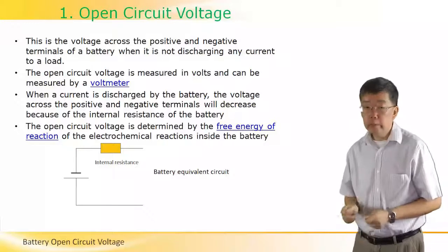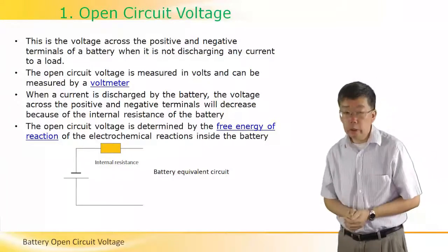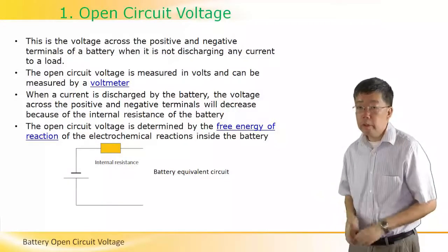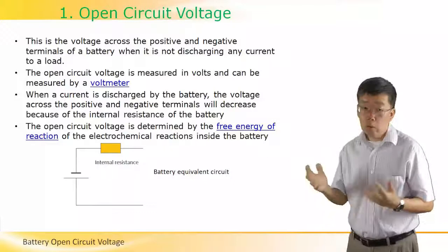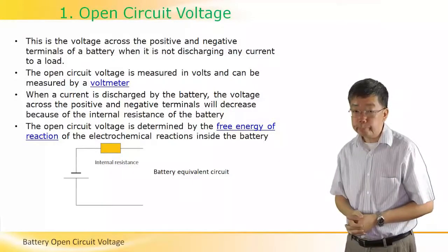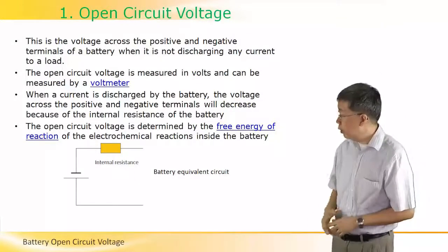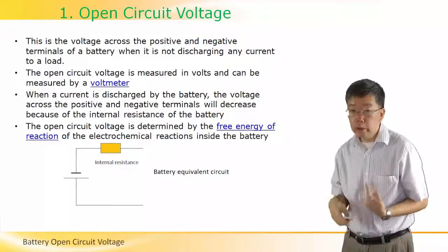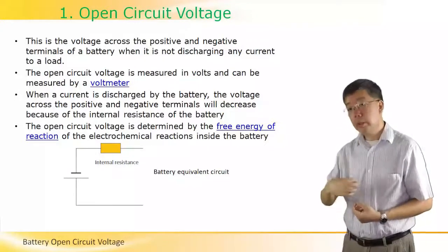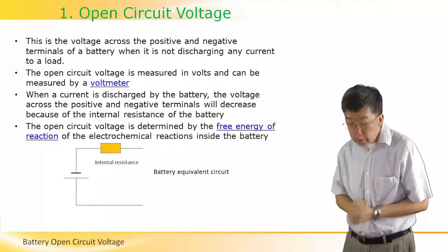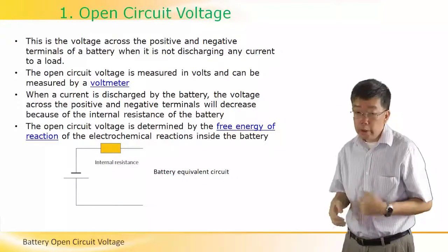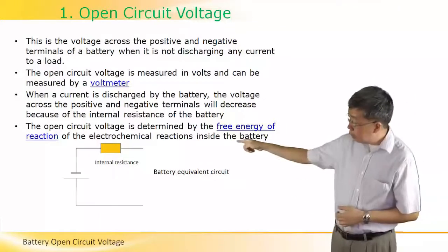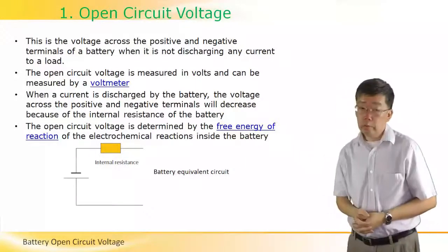In practice we can measure the open circuit voltage, which is in volts, by simply using a voltmeter or a multimeter. The important point here is that the battery should not be discharging any current. No electrons should be coming out of the anode when we do this measurement. The reason is shown by the equivalent circuit at the bottom.